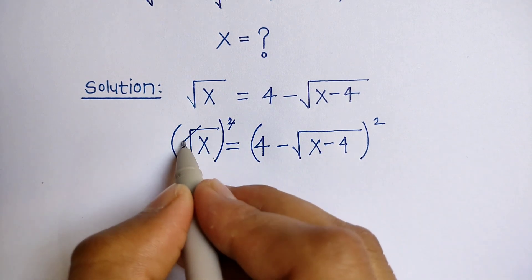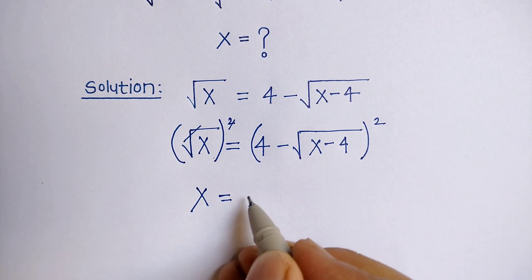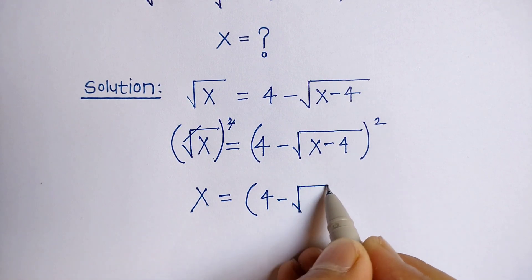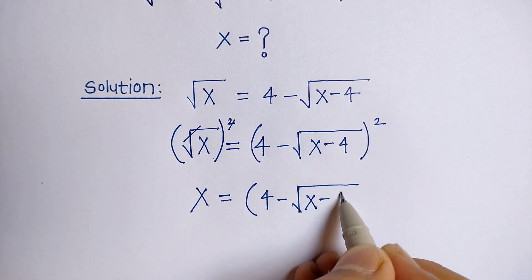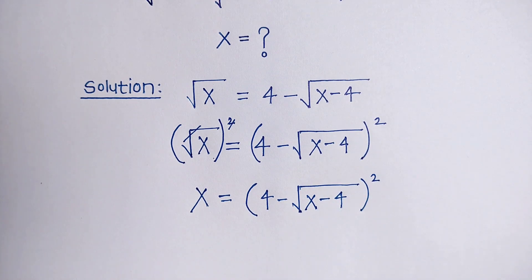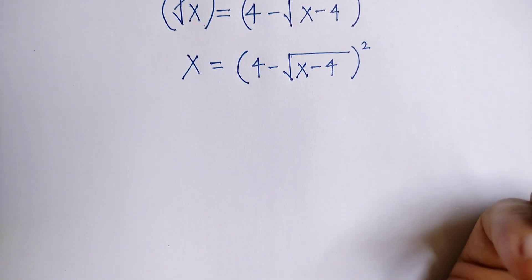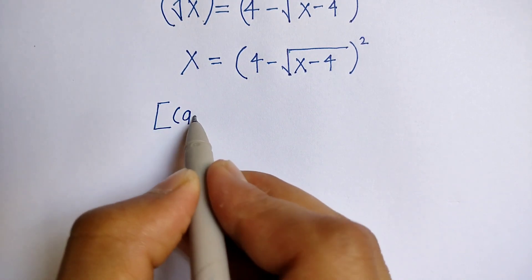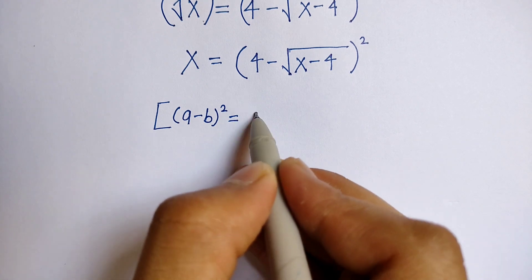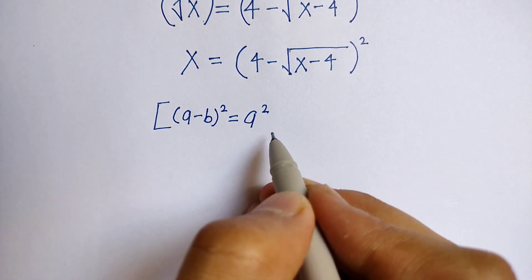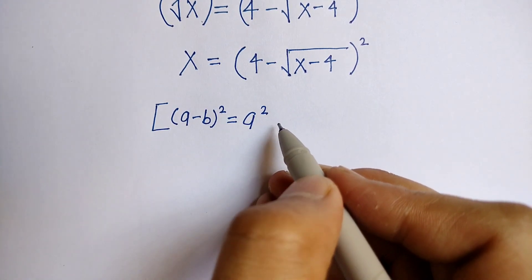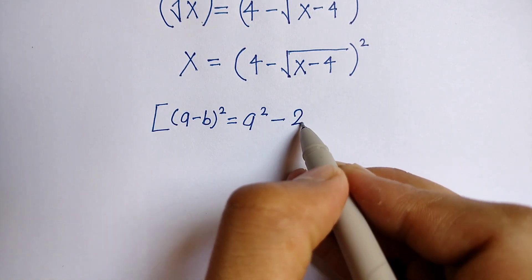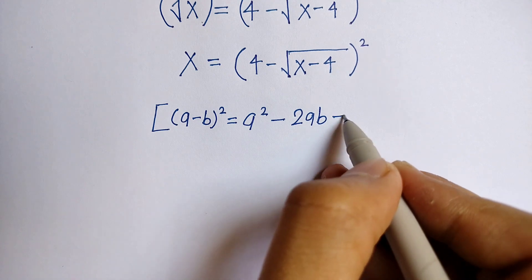The square and square root get cancelled, so we get x is equal to the bracket 4 minus root x minus 4, whole square. Now we know the identity rule of a minus b whole square, that is a square minus 2ab plus b square.